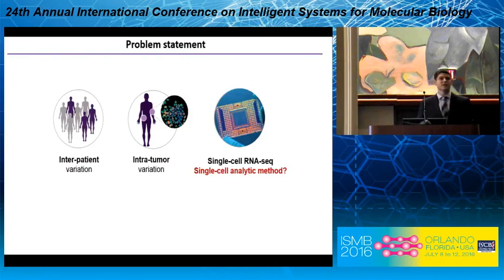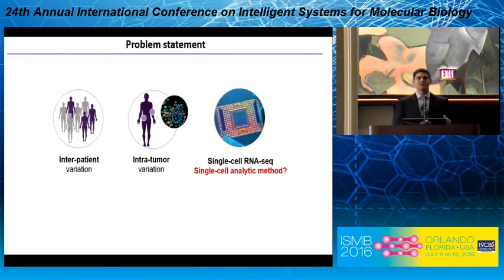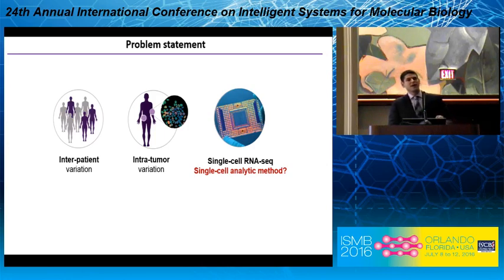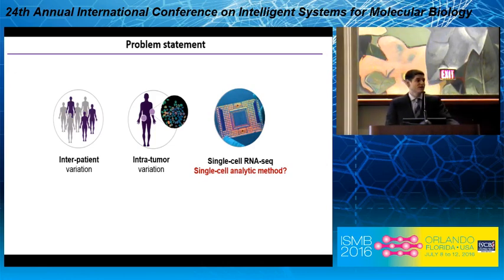Let's take a step back and look at the big picture. Bulk RNA-seq offers a look at average gene expression across tens of thousands of cells, giving us a view of interpatient variation. On the other hand, single-cell RNA-seq offers an unprecedented look at individual cellular expression and can address questions such as intratumoral or intrapatient heterogeneity.